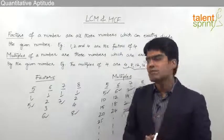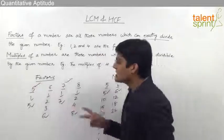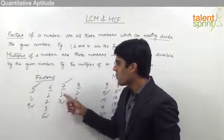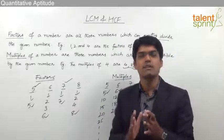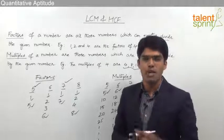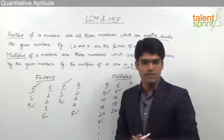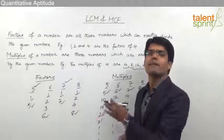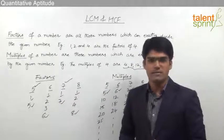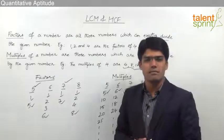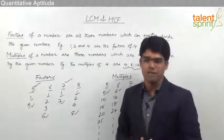One last point: certain numbers like 5 and 7 have exactly two factors — 1 and the number itself. Such numbers are called prime numbers. Numbers which have only 2 factors are prime numbers, like 2, 3, 5, 7 and so on. Numbers which have more than 2 factors are called composite numbers. So prime numbers have exactly 2 factors, and composite numbers have more than 2 factors.